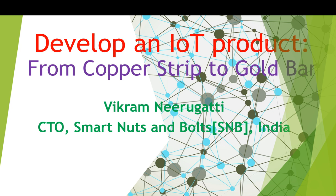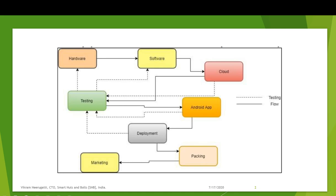Greetings to all. My name is Vikram Nirgati. Today we're going to discuss how to develop an IoT product — from copper stick to gold bar. We have a product development cycle: first hardware, then software, then cloud storage, then user interface (website or Android app), then testing all four modules. Once done, we go for bulk deployment, PCB fabrication, packing with user manual, and finally marketing.